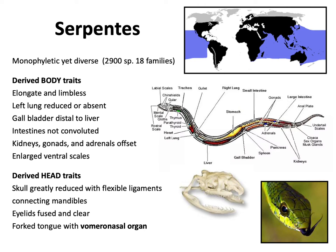So, the snakes — the serpents. Everyone knows what a snake looks like, although there are many things that can look like one. Snakes have taken this general design and run with it: 18 families, almost 3,000 species, found all over the world on every continent and in the ocean. Sea snakes are found in the Indian and Pacific Oceans, though not the Atlantic. This incredibly diverse, very monophyletic group — what are some of the characteristics?